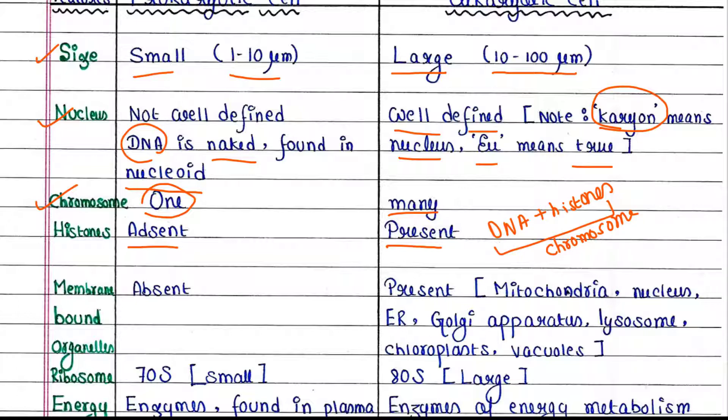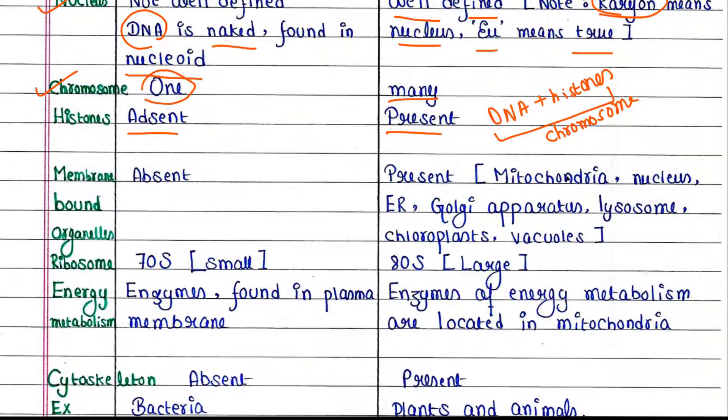Membrane-bound organelles are absent in prokaryotic cells. In eukaryotic cells, membrane-bound organelles are present. These include mitochondria, nucleus, endoplasmic reticulum, Golgi apparatus, lysosomes, chloroplasts, vacuoles, etc.